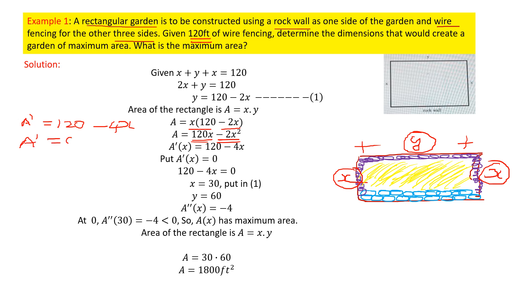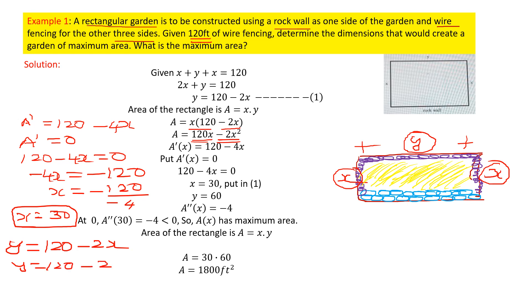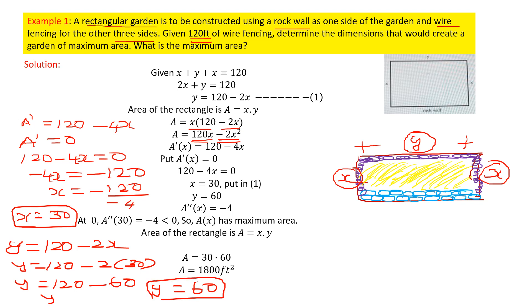Setting the first derivative equal to zero: 120 minus 4x equals 0, so minus 4x equals minus 120, giving x equal to 30. Substituting x equals 30 into equation number 1: y equals 120 minus 2 times 30, so y equals 120 minus 60, which gives y equal to 60. So x equals 30 and y equals 60.